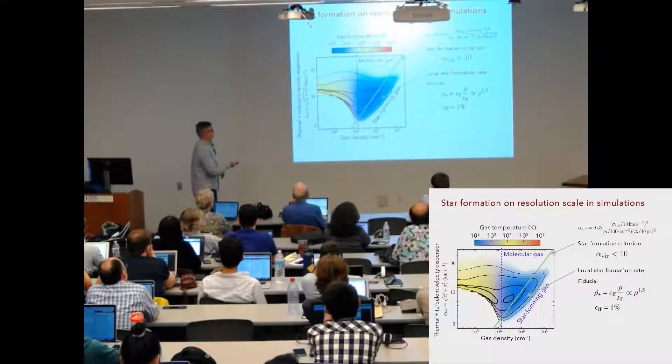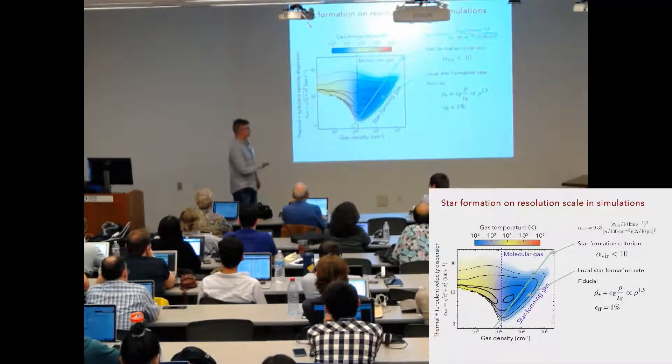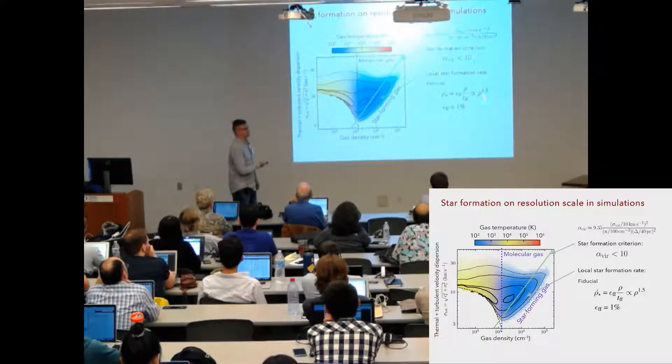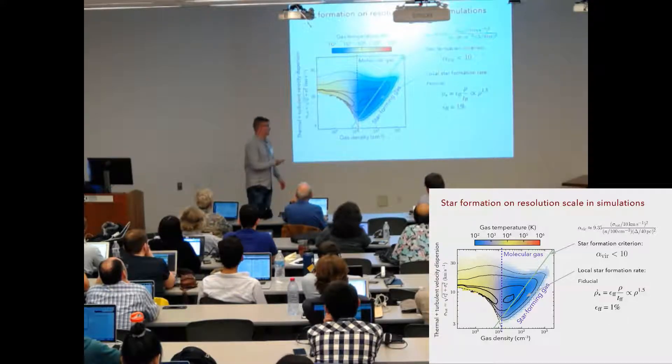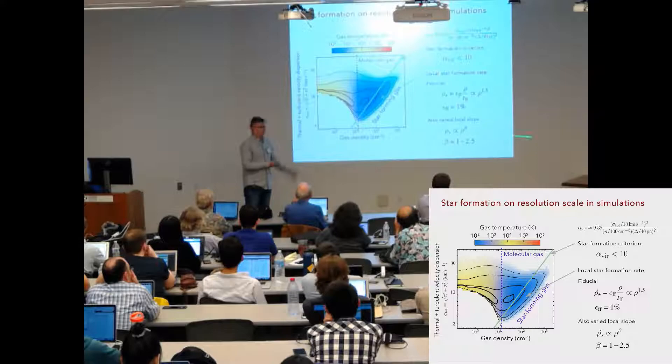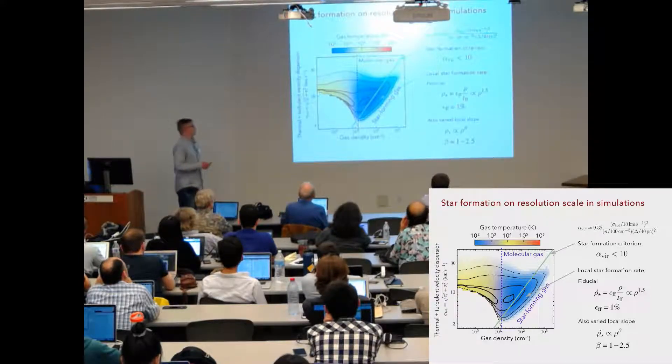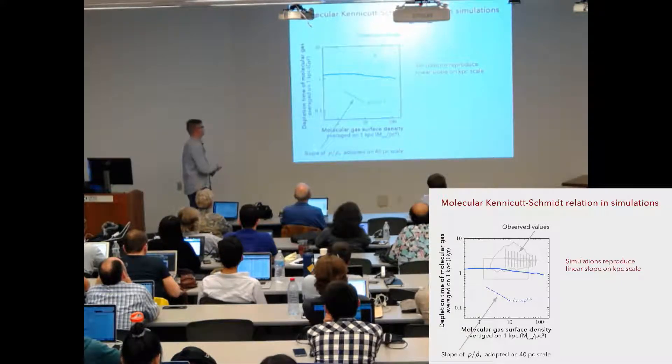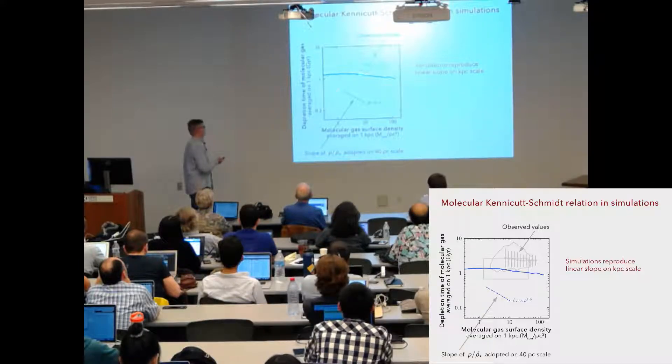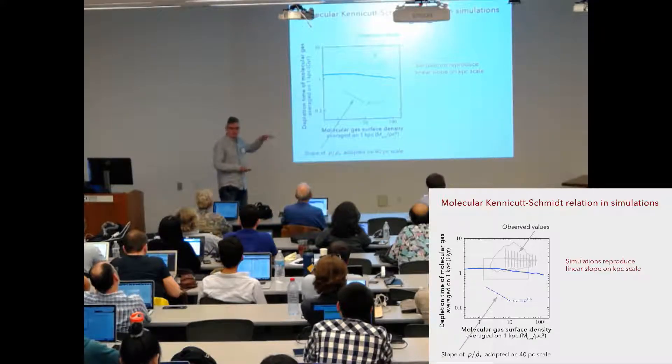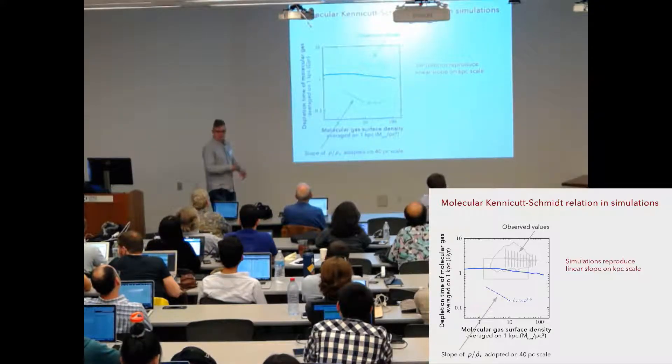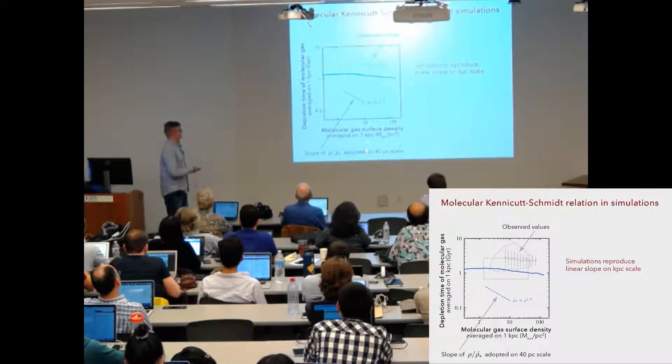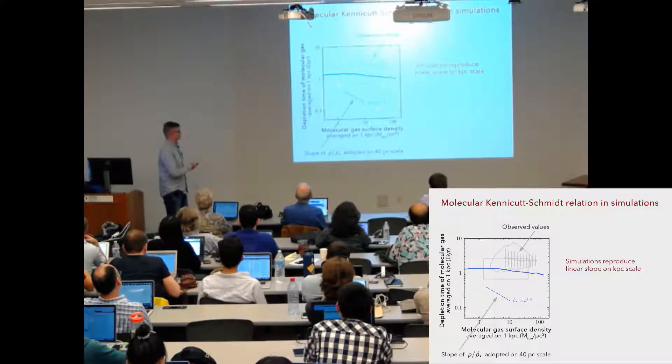And another important thing to check is how the slope which we assume locally affects the slope measured globally. When we set efficiency per free-fall time to a constant, we effectively say that local star formation rate scales as density to the power of 1.5, but in simulation we can of course control this and set this value to anything. This is the result of our fiducial simulation. It shows that molecular gas depletion time on kiloparsec scales is almost independent of the surface density. We, in this fiducial simulation, produce something close to a linear relation in agreement with the observations, even though on the resolution scale we assume a much steeper slope which is shown here by dashed line.